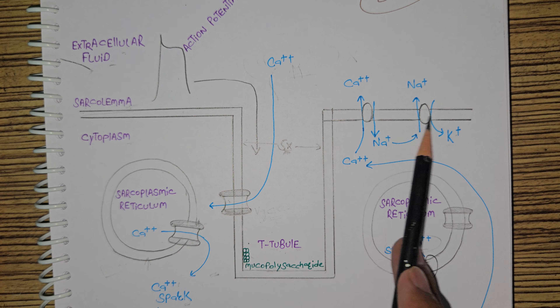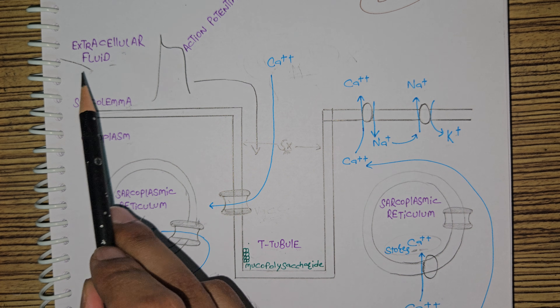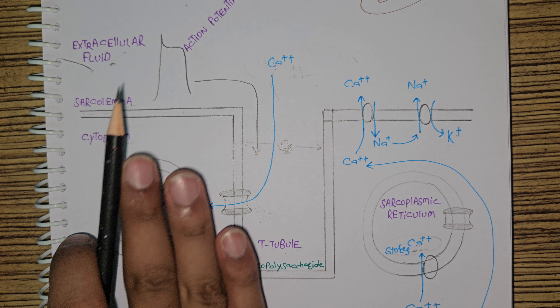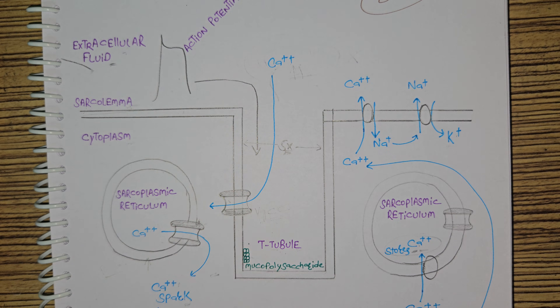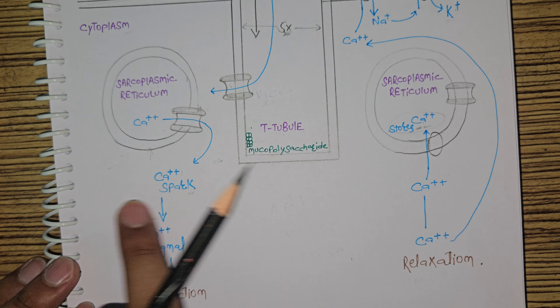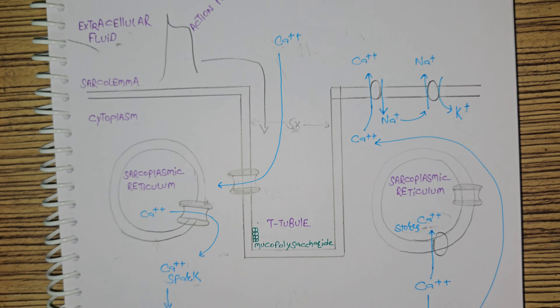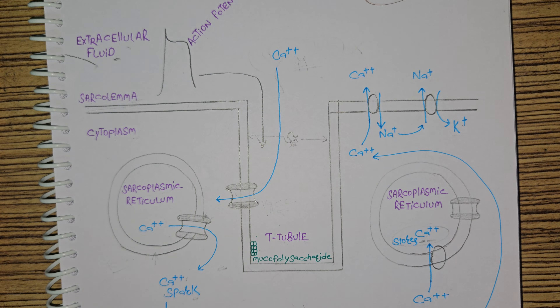This right here is the sarcolemma, or the plasma membrane of a cardiac muscle cell. This is the extracellular fluid outside the cell, and this is the cytoplasm — this part right here is the cytoplasm of the cardiac muscle cell.